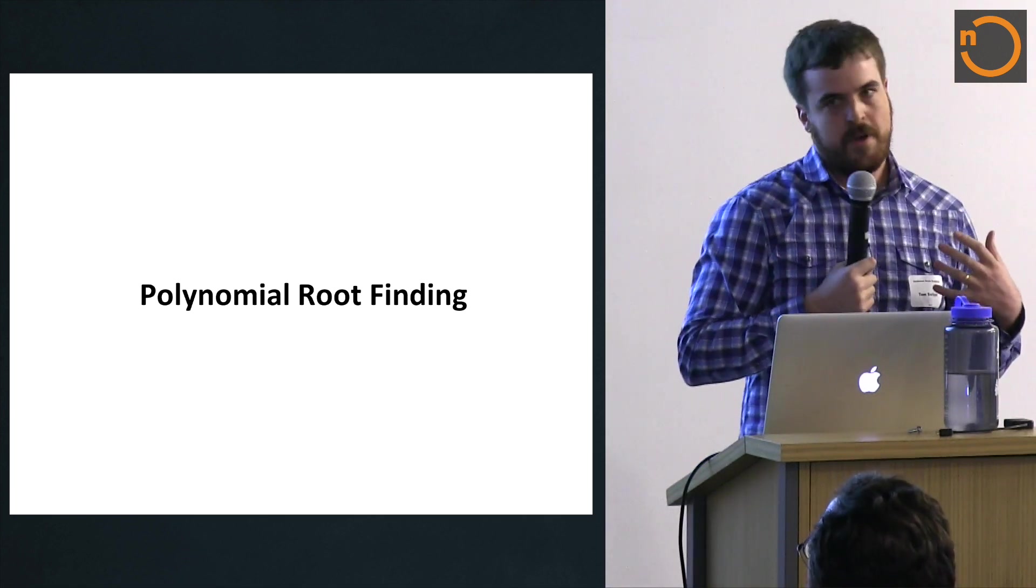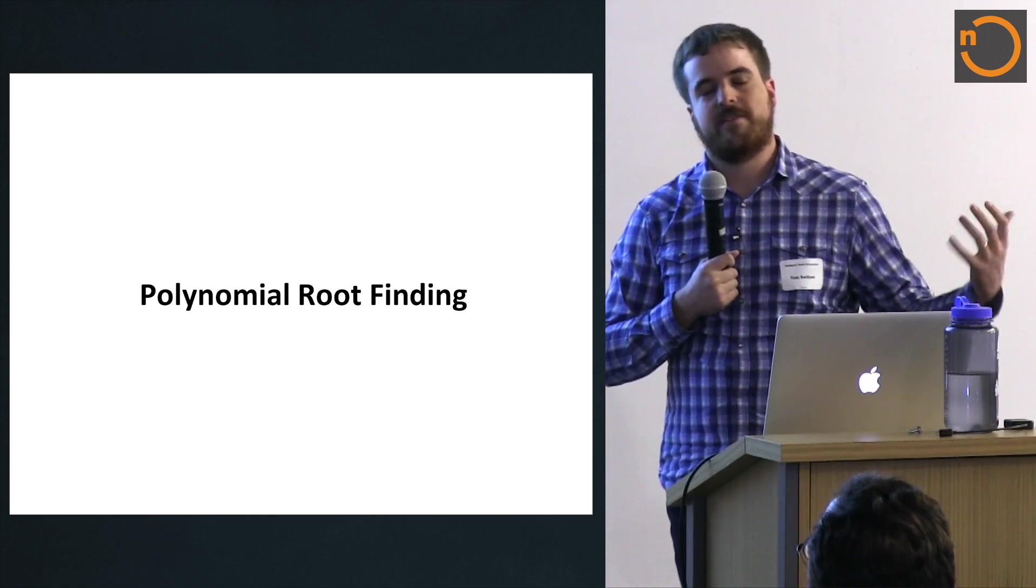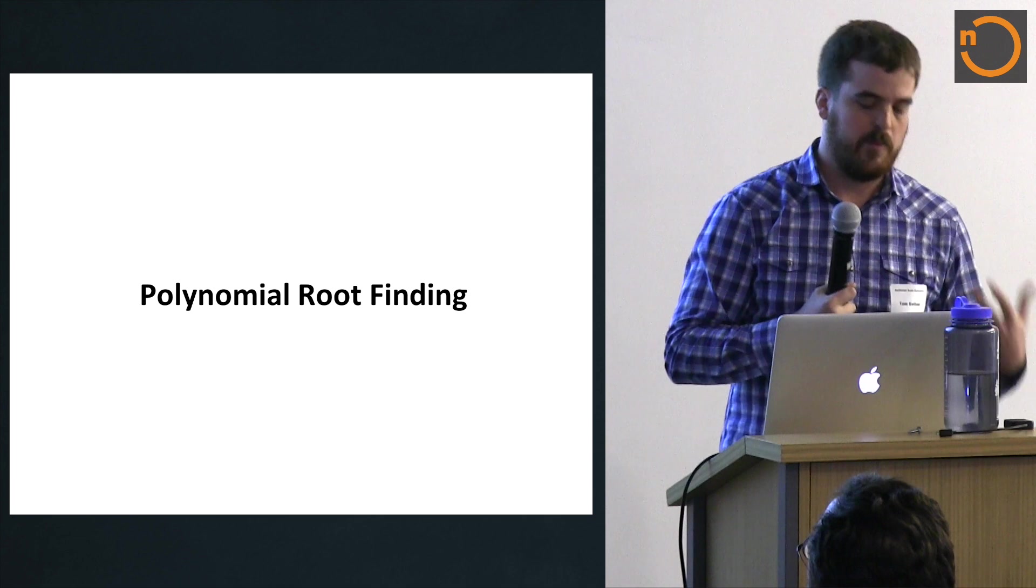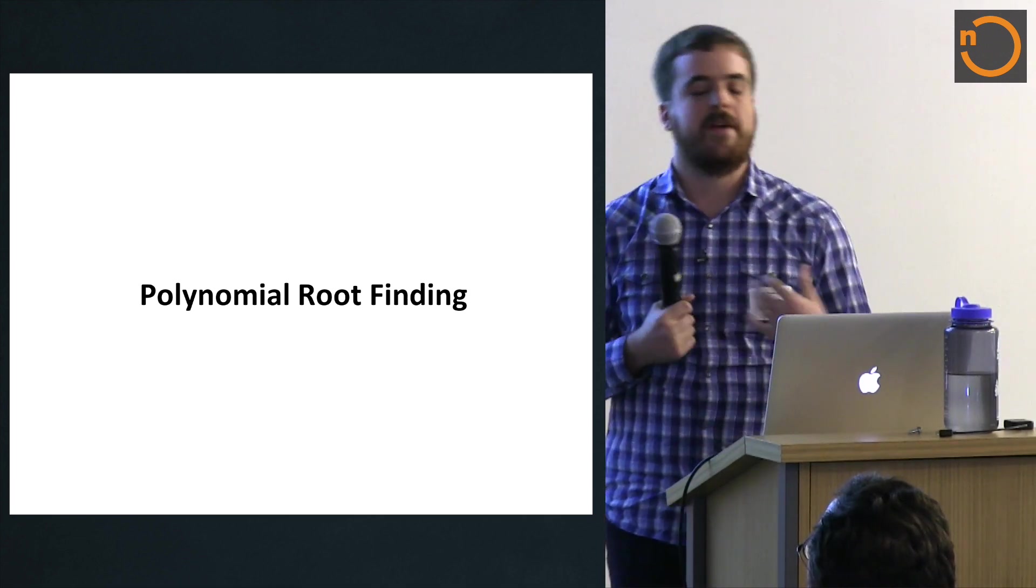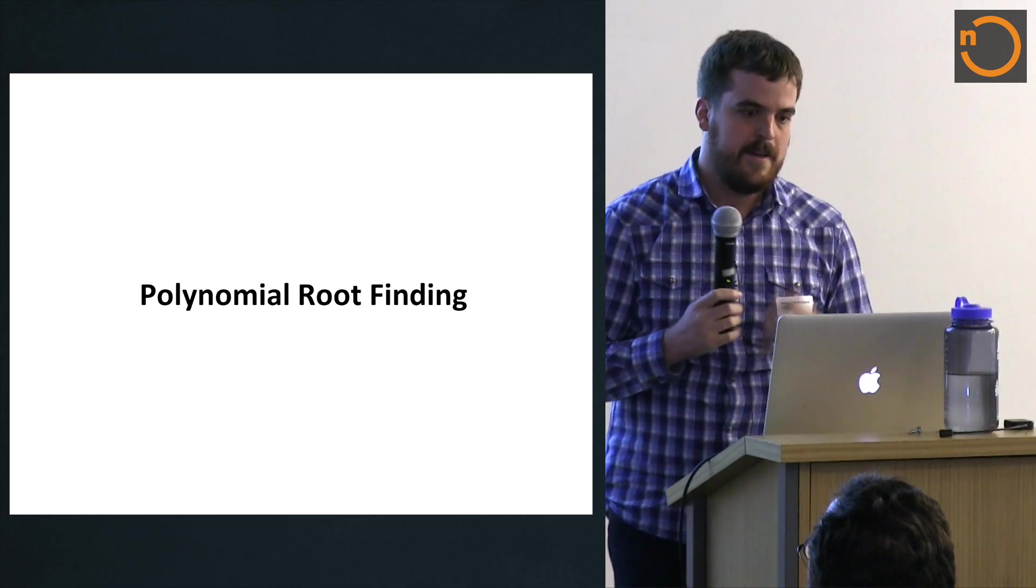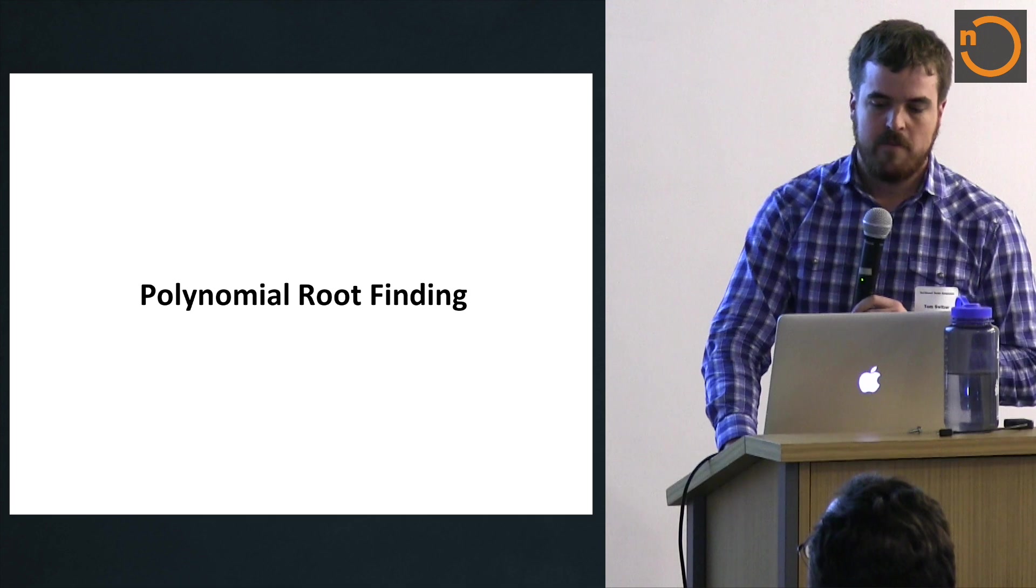So that example was sort of, we had doubles, and we wanted to basically make our, we had some test that uses doubles, and we wanted to make it exact. And so we used that. In this other case, we have an exact type, and we want to make it faster, we have an algorithm that uses exact types, and we want to make it a little faster using floating point filters. So I'm glad Eric introduced polynomials earlier.